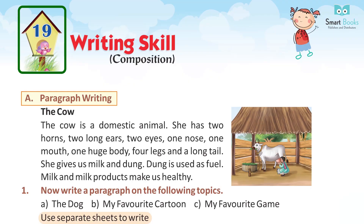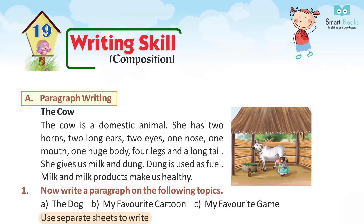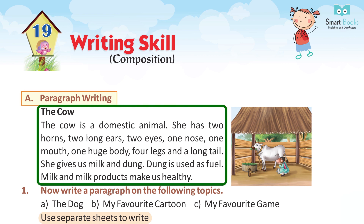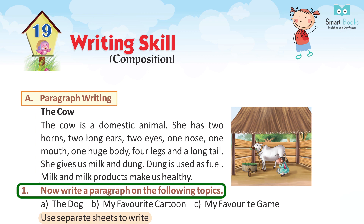Chapter 19: Writing Skills — Composition. A paragraph writing: The Cow. The cow is a domestic animal. She has two horns, two long ears, two eyes, one nose, one mouth, one huge body, four legs, and a long tail. She gives us milk and dung. Dung is used as fuel. Milk and milk products make us healthy.